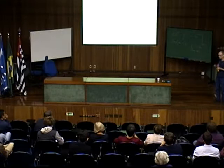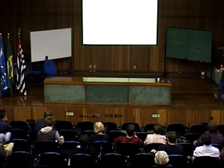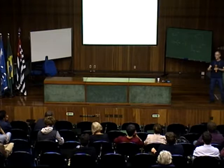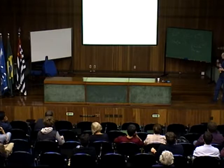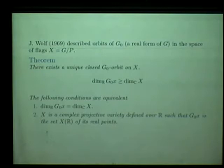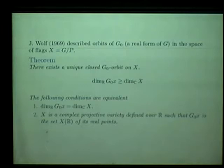This orbit has real dimension greater than the complex dimension of the manifold. If the real dimension is precisely the complex dimension of the manifold, then the complex manifold is in fact a complexification of the real orbit. So in the case of closed orbits which are half the dimension, the whole flag variety is encoded in some way in the real orbit.